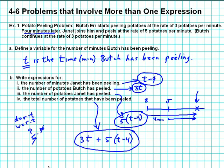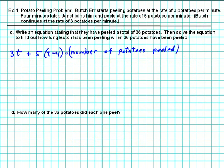Okay. I've carried over the expression that we just now figured out in the last part. It says, write an equation stating that they have peeled a total of 36 potatoes. Well, what is this expression? This expression says how many potatoes have been peeled at a given time t. And if they've peeled 36, then we know what this expression is equal to. And so we write that down.